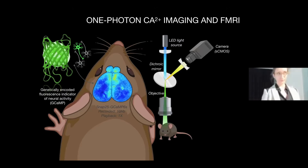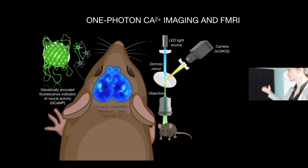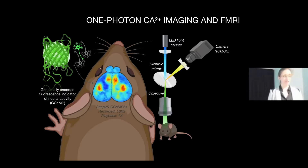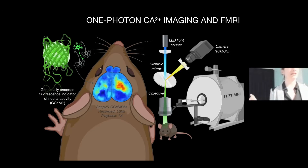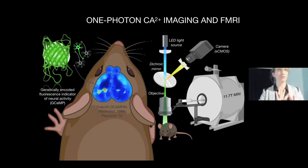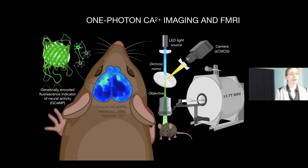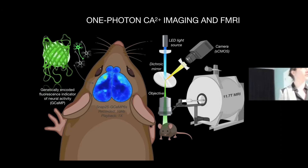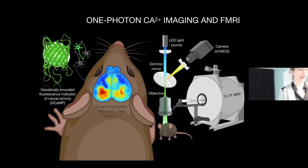Traditionally, this is collected using an LED light source, forming optics including a dichroic mirror, an objective above the animal, and a CMOS camera on the other end. It's a top-down setup with lots of metal components occupying about a square meter of space. The first challenge was getting this inside our 11.7 Tesla magnet, which has a bore diameter of about nine centimeters — roughly the size of the palm of your hand. The resolution trade-off is field of view: a single pixel is about 25 by 25 microns, covering olfactory bulb to cerebellum.